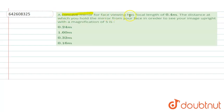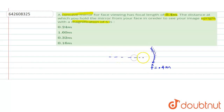The problem states that a concave mirror has a focal length of 0.4 meters. The distance at which you hold the mirror from your face in order to see your image upright with a magnification of five is what we need to find. We have a concave mirror with focal length 0.4 meters, and we must find the distance of the object from the mirror.